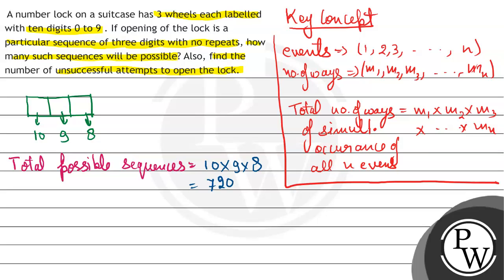Then it says find the number of unsuccessful attempts. It means इस 720 sequences में से, successful attempts तो एक ही होगा, तो number of unsuccessful attempts is equal to 720 minus 1 is equal to 719.